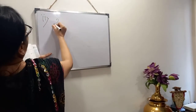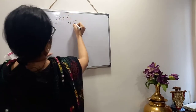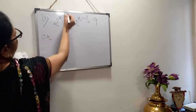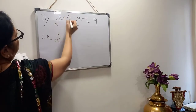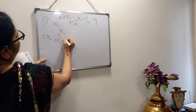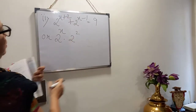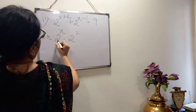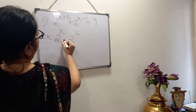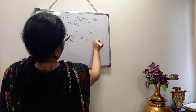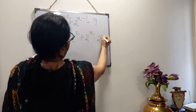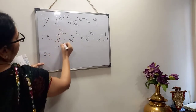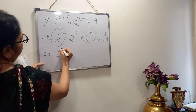Sum number 2: 2 to the power x plus 2, plus 2 to the power x minus 1, equals 9. Now, since there is addition and in multiplication powers are added, I can separate each term. We write this as 2 to the power x into 2 squared, plus 2 to the power x into 2 to the power minus 1, equals 9.